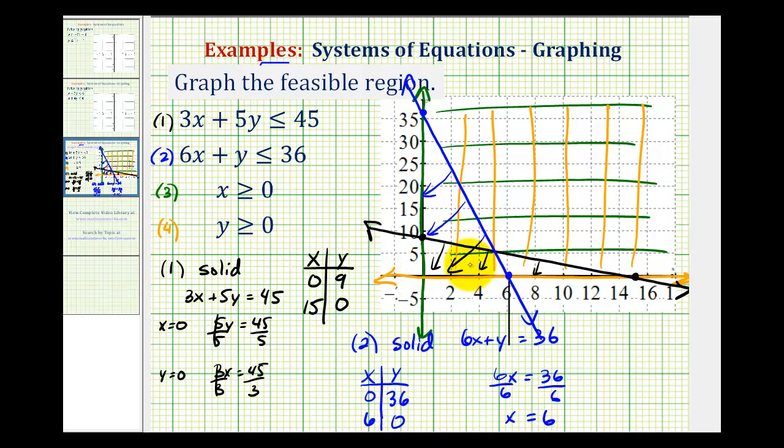And this does get kind of messy, but hopefully you can tell the region that's been shaded four times is this small quadrilateral here that is bounded by the green vertical line, the orange horizontal line here, the blue line here, and the black line here. So the feasible region is this small region here.